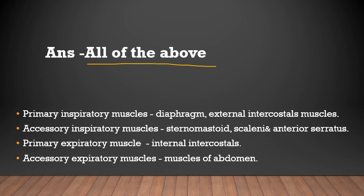Primary inspiratory muscles are the diaphragm and external intercostal muscles. Accessory inspiratory muscles are sternocleidomastoid, scalene, and anterior serratus. Expiratory muscles are the internal intercostals, and accessory expiratory muscles are the abdominal muscles.